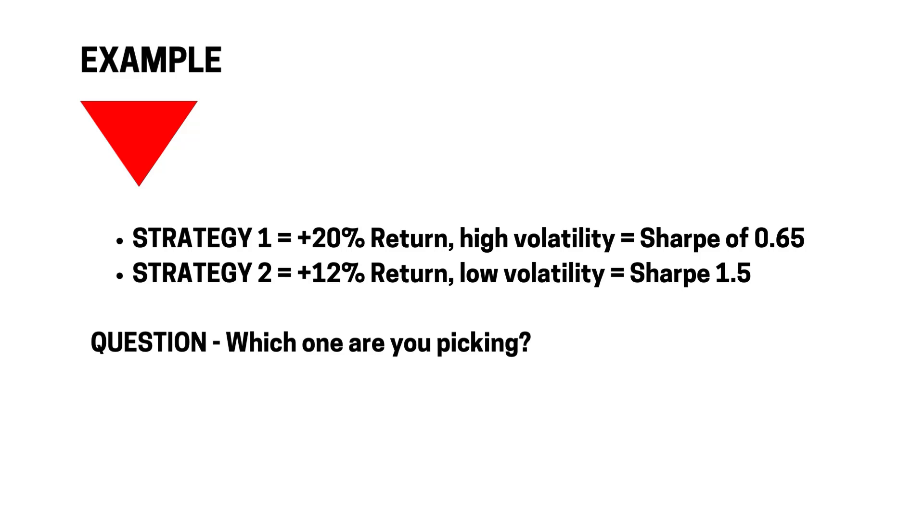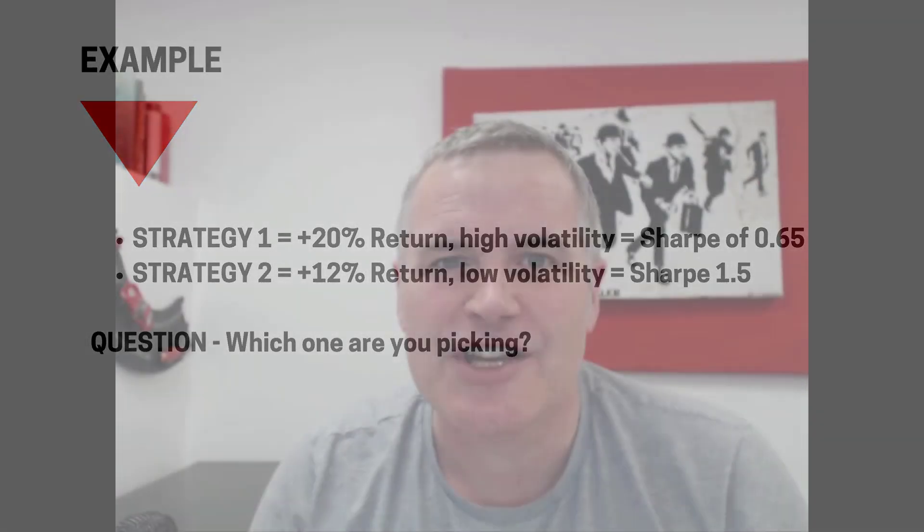Strategy 2 gives you the higher Sharpe, is easier to plan with, easier to scale up — it has so many more advantages. I can't urge you enough to start using the Sharpe ratio in your trading. The big players of this world know their Sharpe ratio off the top of their head, and that's what you should do as well. It's going to help your execution, your psychology, your confidence in understanding the mechanisms of your trading. You know what deviations to expect, so you don't panic — you know what's coming.